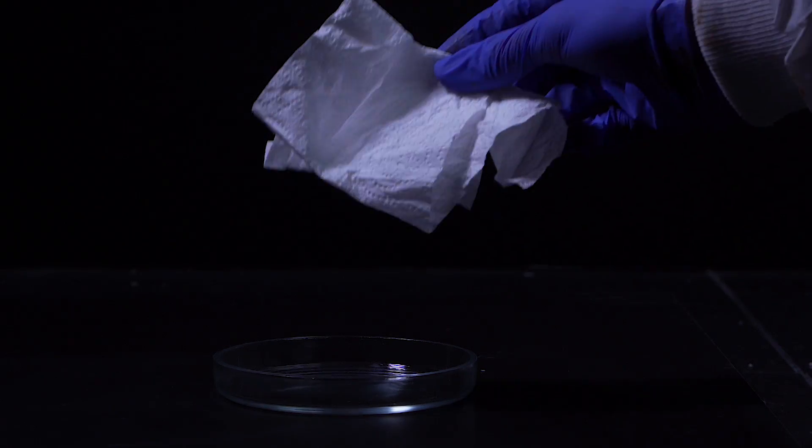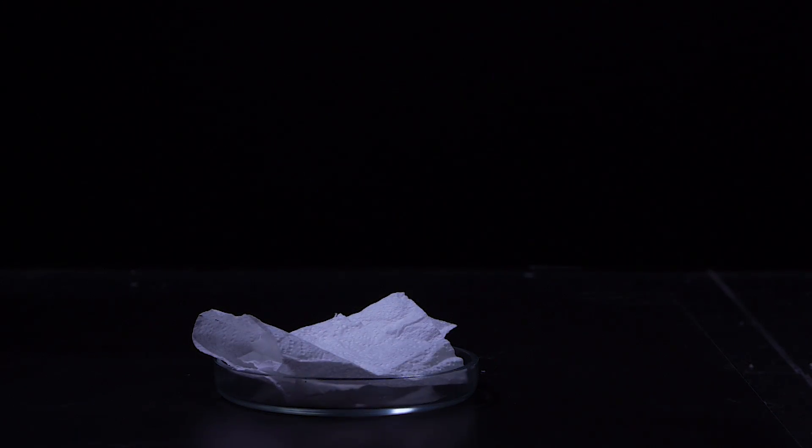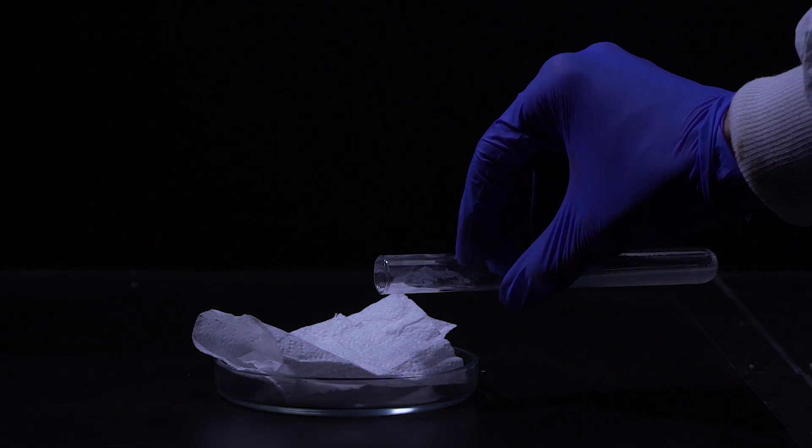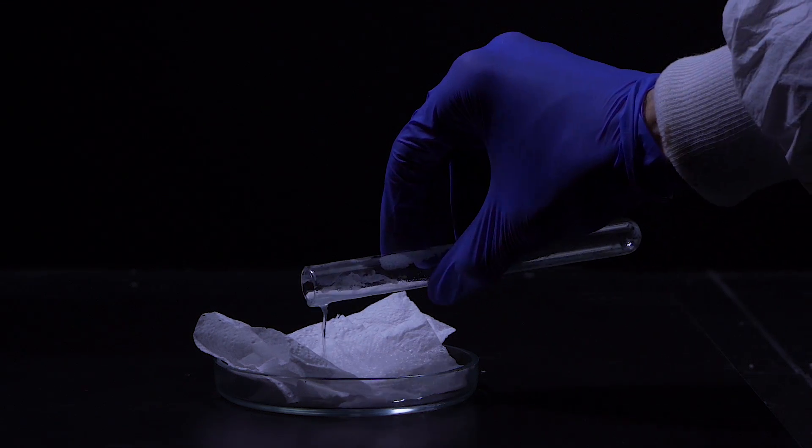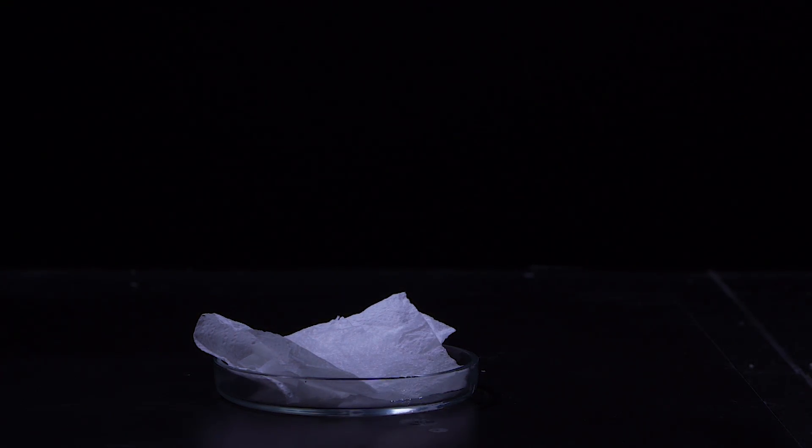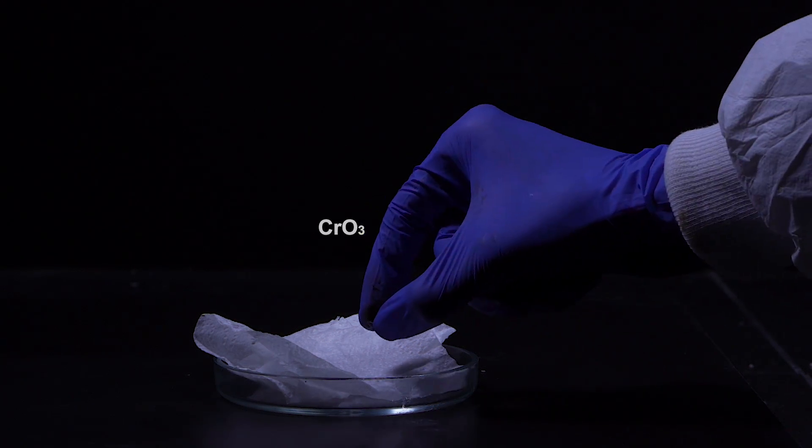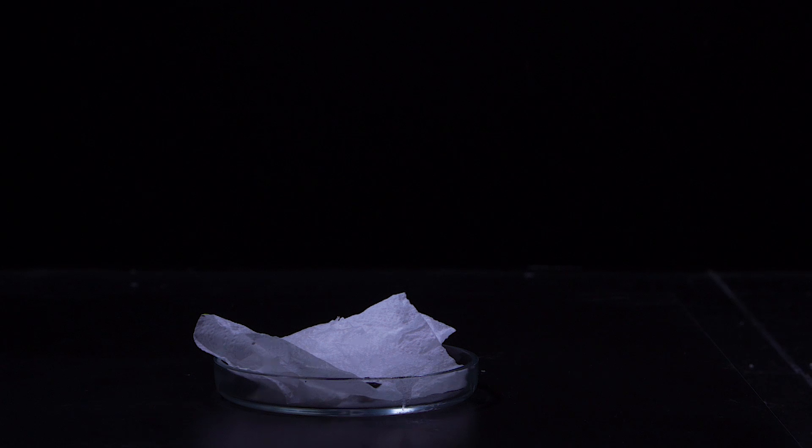And now I'll take a piece of toilet paper, pour the solution that I got on it, and put a little chromic anhydride crystal on top. Then I'll just hide in a safe place and hope to see you in the next video.